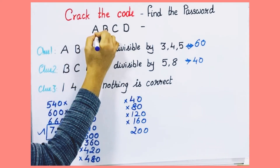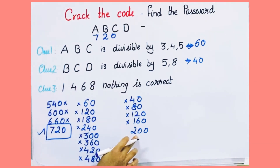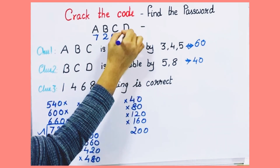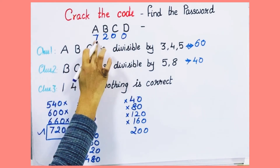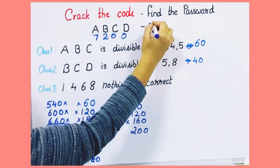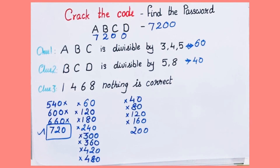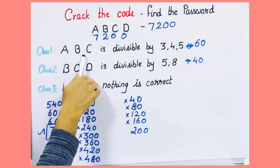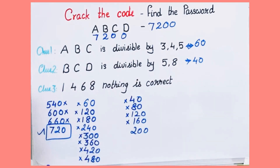If ABC is 720, then BCD is 200. So we have found the password. The 4-digit password ABCD is 7200. ABC is a multiple of 60 and BCD is a multiple of 40 — this is the answer.